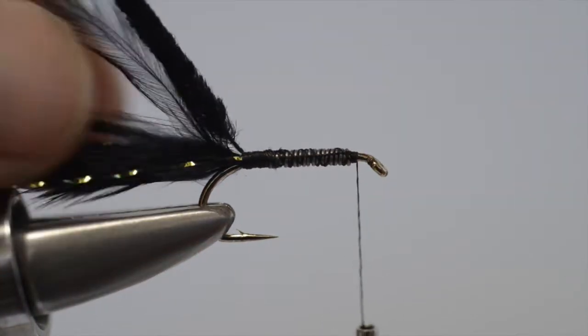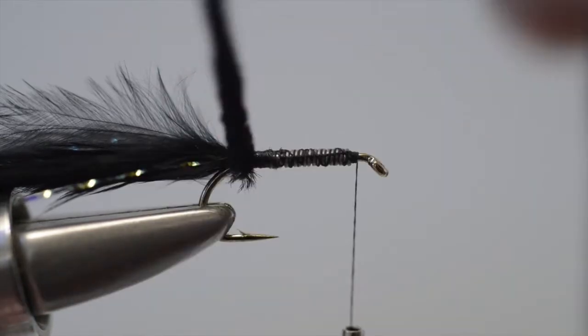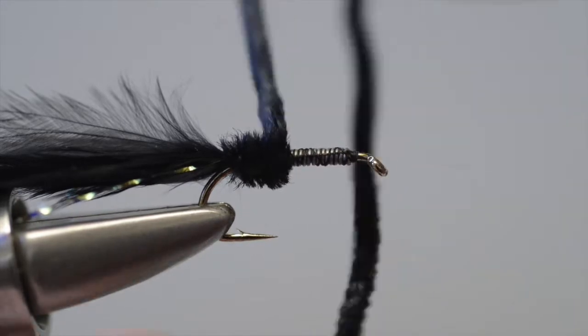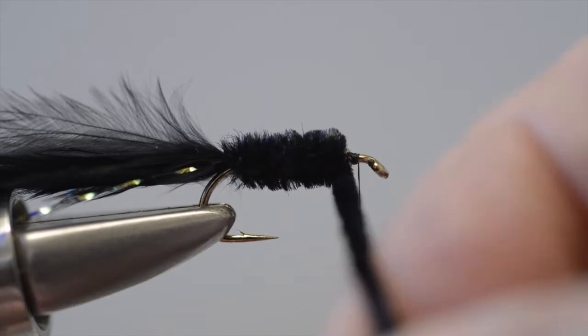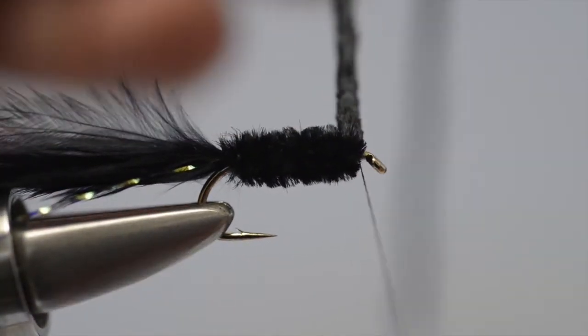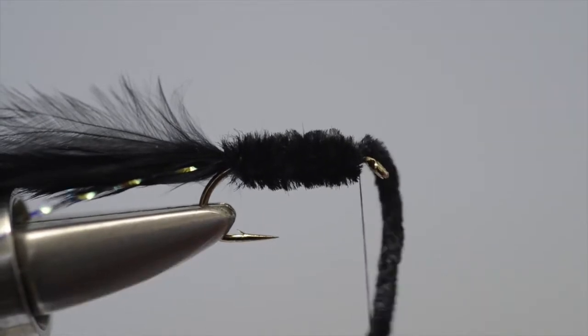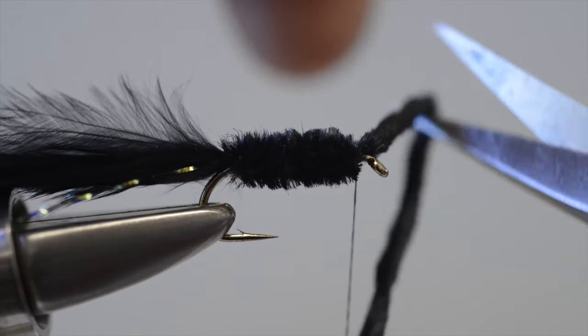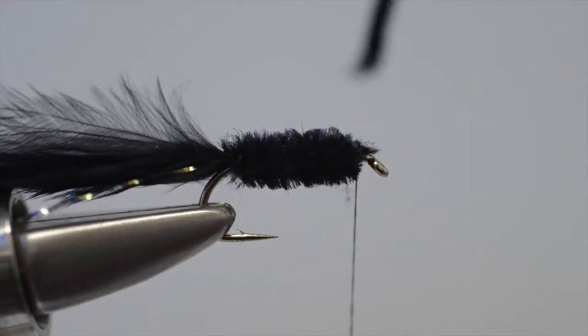Then we take hold of the chenille, make sure that the marabou doesn't get stuck to it, and just carefully wind, in touching turns, to get a nice chunky body. Bring it forward, then use the tying thread just to secure the loose end. Take the scissors, and remove the waste end.